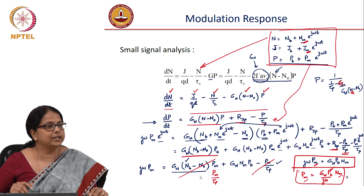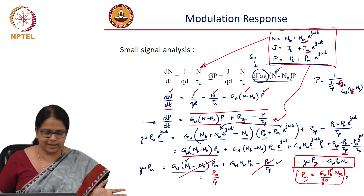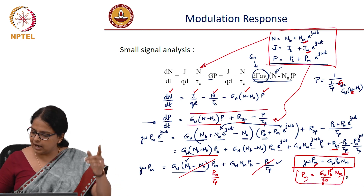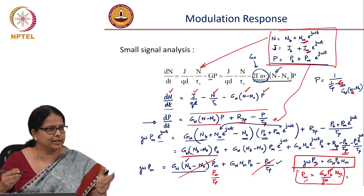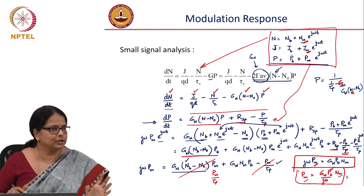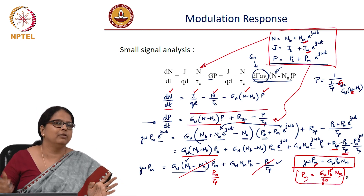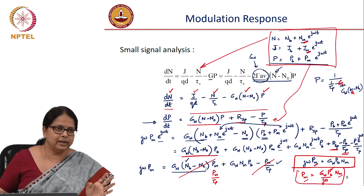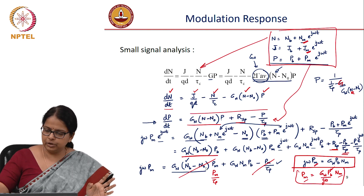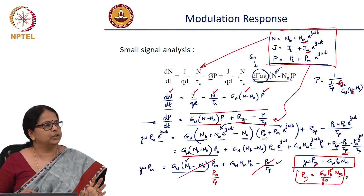Today we started deriving the modulation response, and our goal is to prove it is going to be faster than τ_c. Notice that τ_c has not yet appeared in the picture — R_sp got cancelled, so there is no τ_c, τ_radiative, or τ_non-radiative yet. It is going to be decided by something else. Substitute into the carrier density equation and derive H(jω).